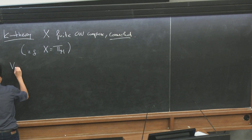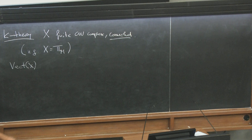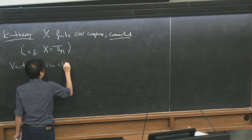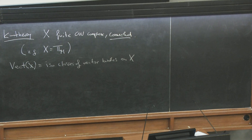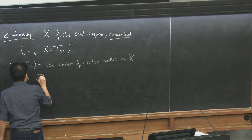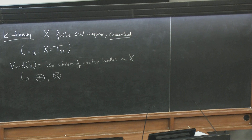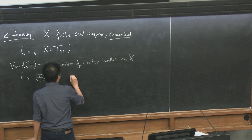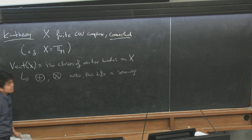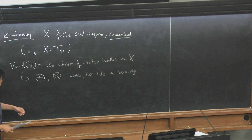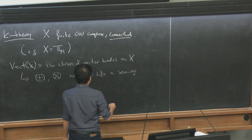We look at isomorphism classes of vector bundles on X. Vector bundles have operations: you can take direct sums and tensor products. This makes them into a semi-ring. A semi-ring is the same as a ring except you don't have additive inverses — it's something like ℕ.